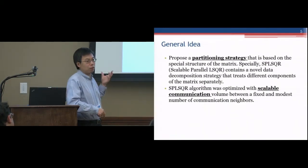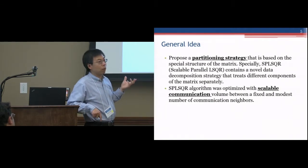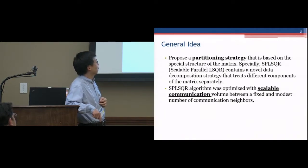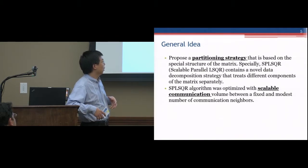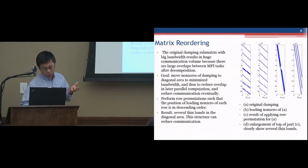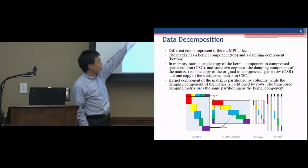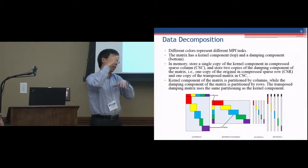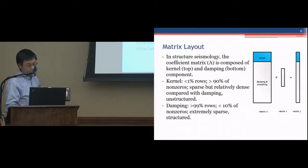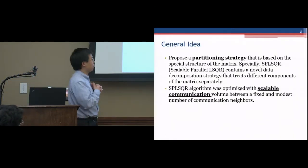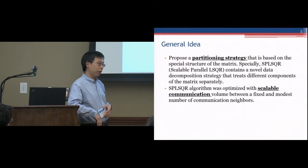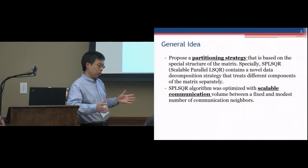Our optimization is focused on this kind of matrix. We propose a partition strategy based on the special structure of the matrix. Specifically, our approach contains a novel data decomposition strategy that treats different components of the matrix separately. Because the matrix has two parts — the kernel and the damping — we do a different partition for the kernel compared to the damping partition. In this way, we will have better communication, and the whole approach will be much more scalable than before, because we avoid some global communication.